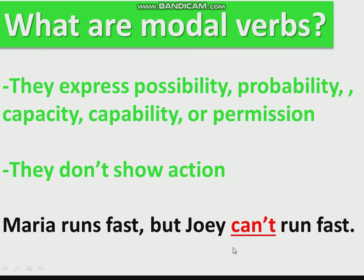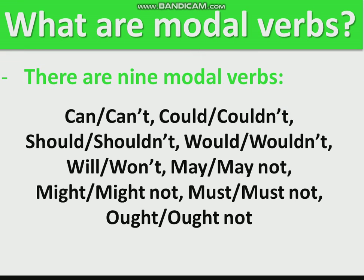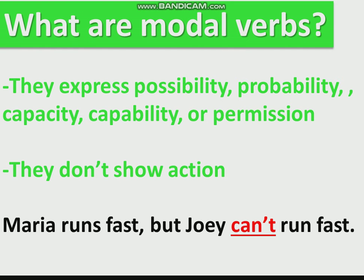There are nine modal verbs in the English language. Here they are with their negative forms: can / can't, could / couldn't, should / shouldn't, would / wouldn't, will / won't, may / may not, might / might not, must / must not, ought / ought not. Remember, these nine modal verbs express possibility, probability, capacity, capability, or permission — but they don't show action. They are not normal verbs; they are modal verbs.